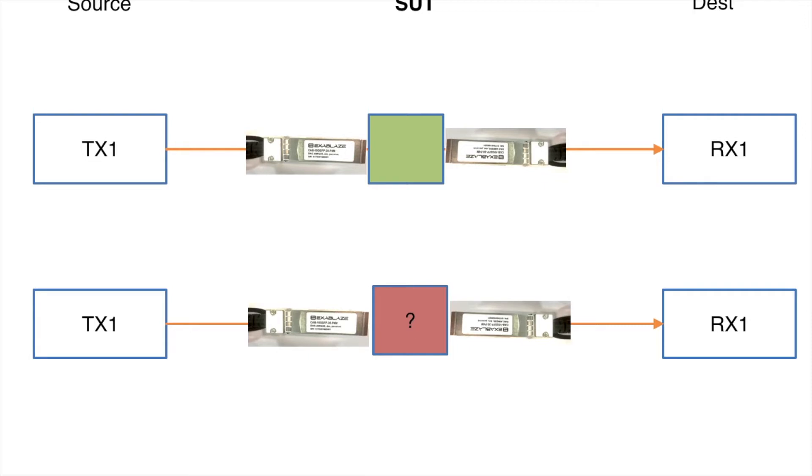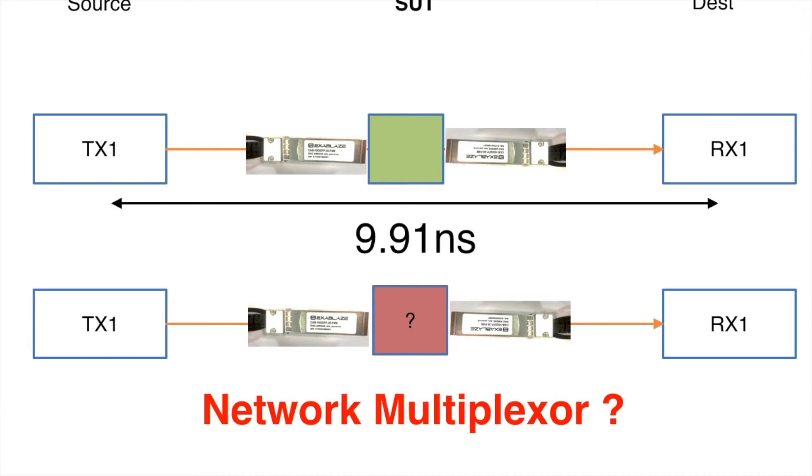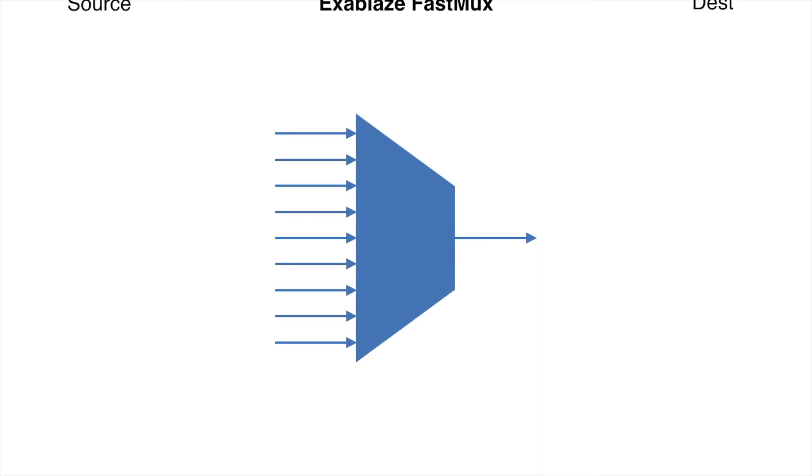So the question is, why don't we use this to measure something real? One of the products that Exablaze makes is called the Exalink Fusion FastMux, or Fast Multiplexer. For those of you that don't know, a multiplexer is a device that takes many connections and aggregates them to be one. So in this case, many 10-gig connections are aggregated to become one 10-gig connection to share usually an expensive connection somewhere.